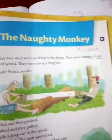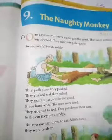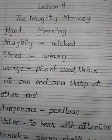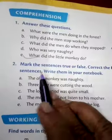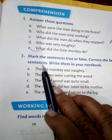Today we are doing make sentences — make the sentences true or false. Lesson 9, The Naughty Monkey. I hope you understand this chapter very well. In previous videos, we did word meaning and question answer. Today we are doing a new exercise: make the sentences true or false, correct the false sentences, and write them in your notebook. So children, get ready for the work.